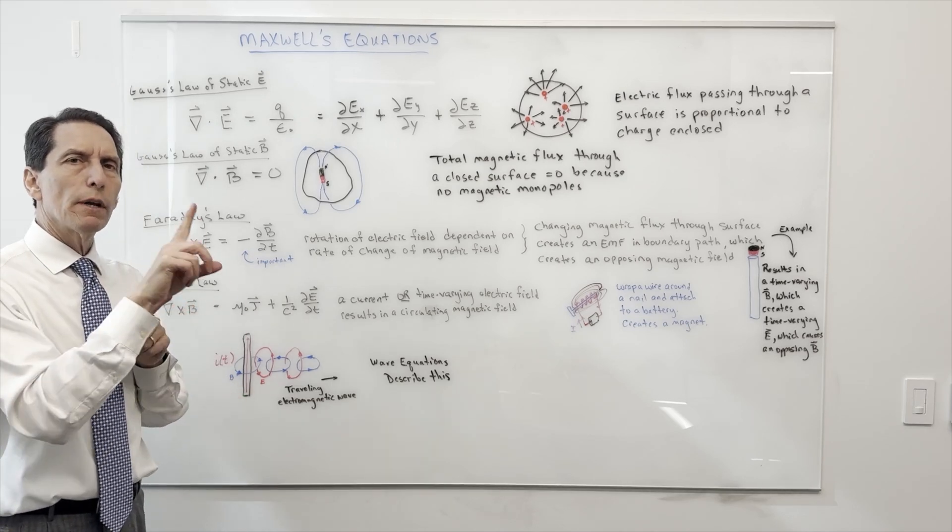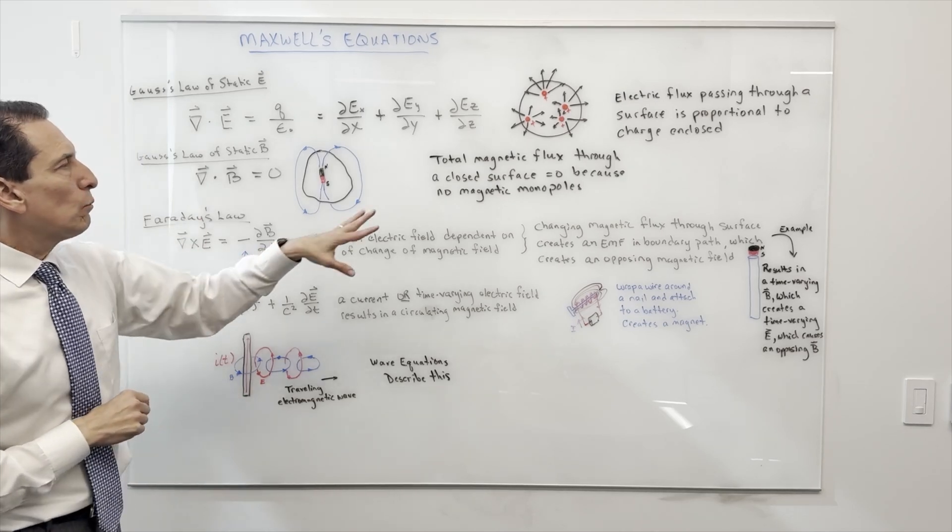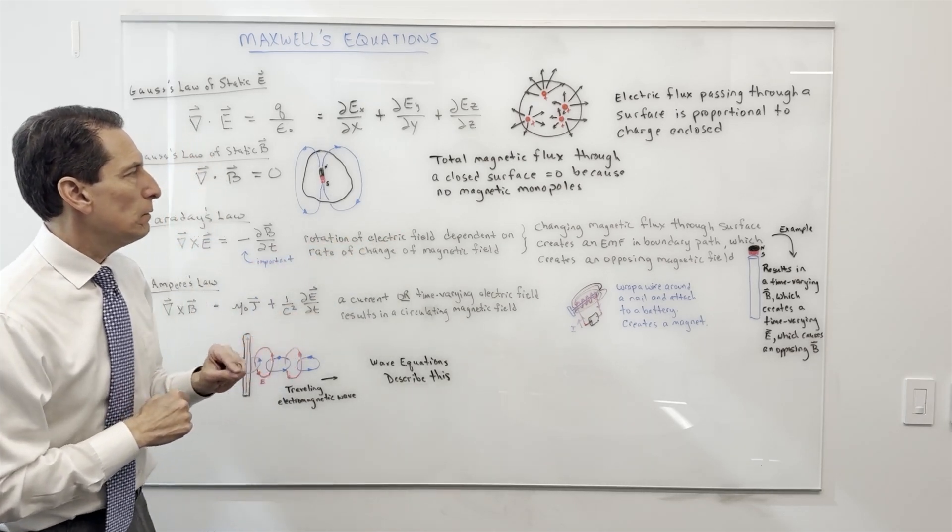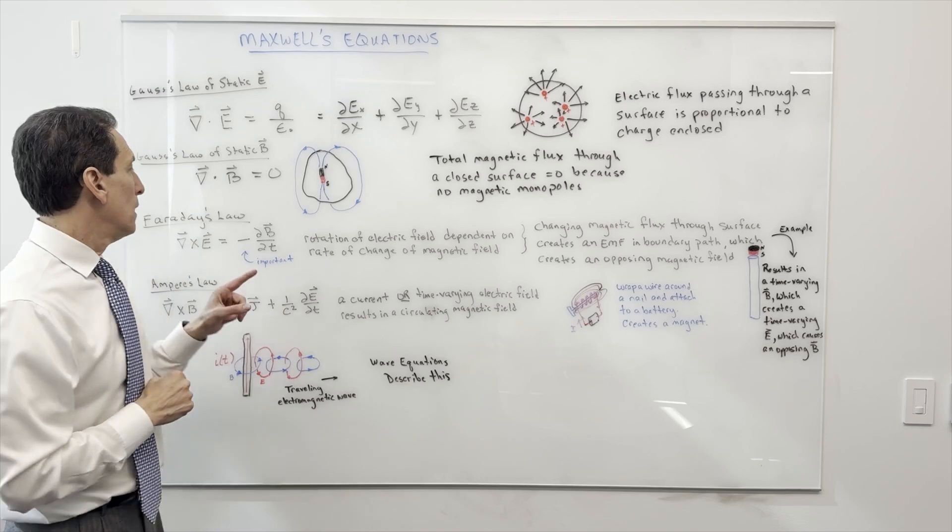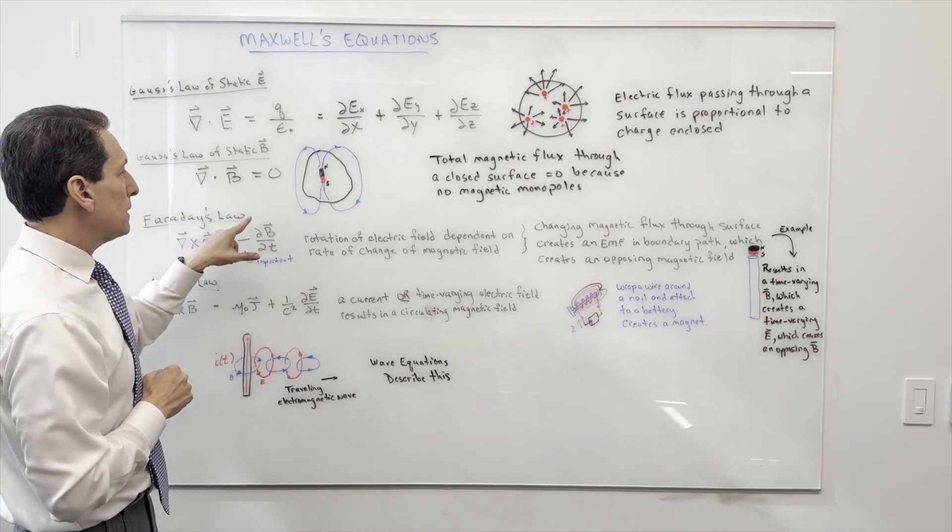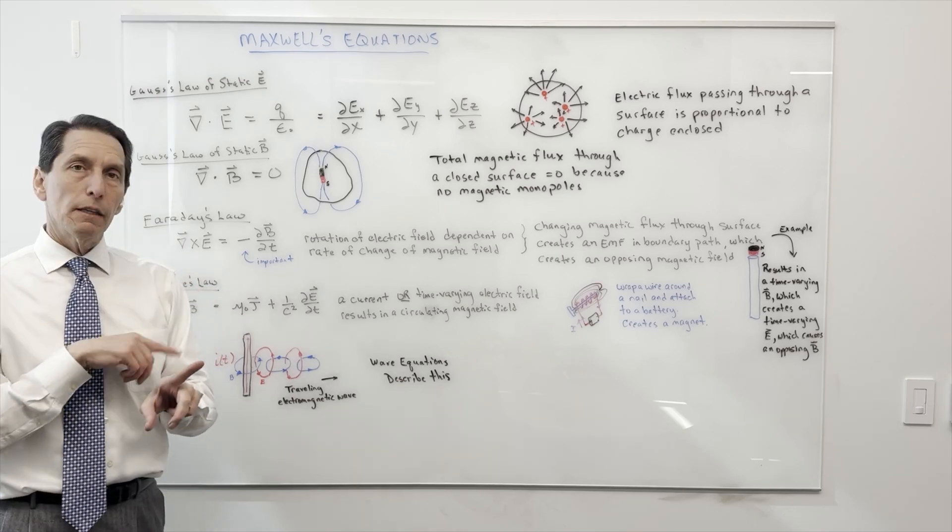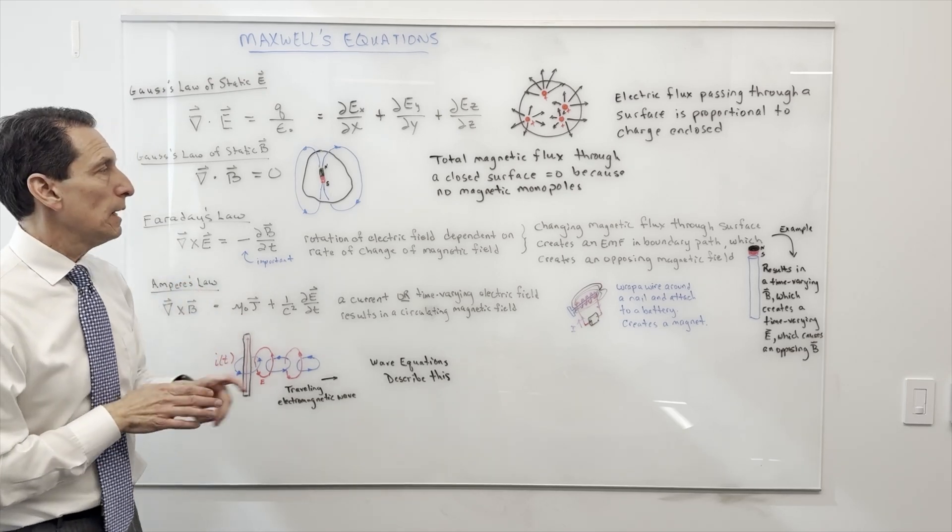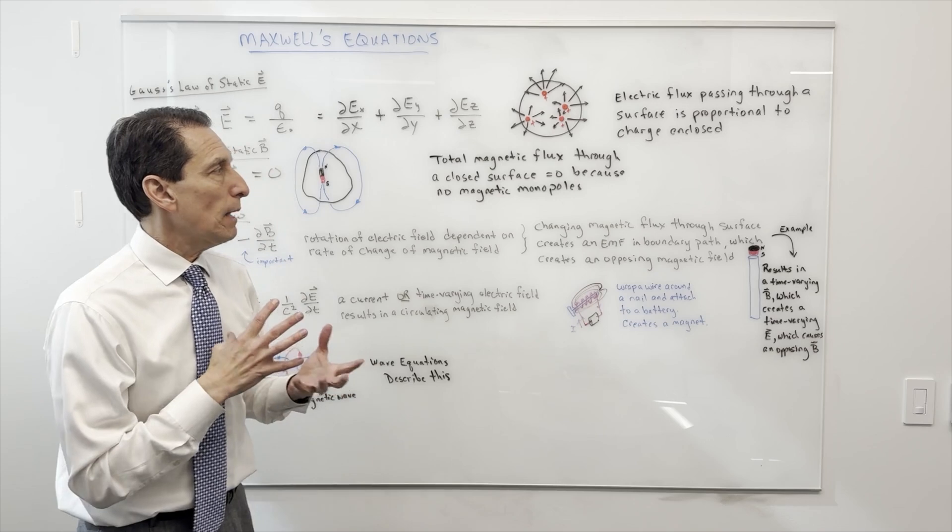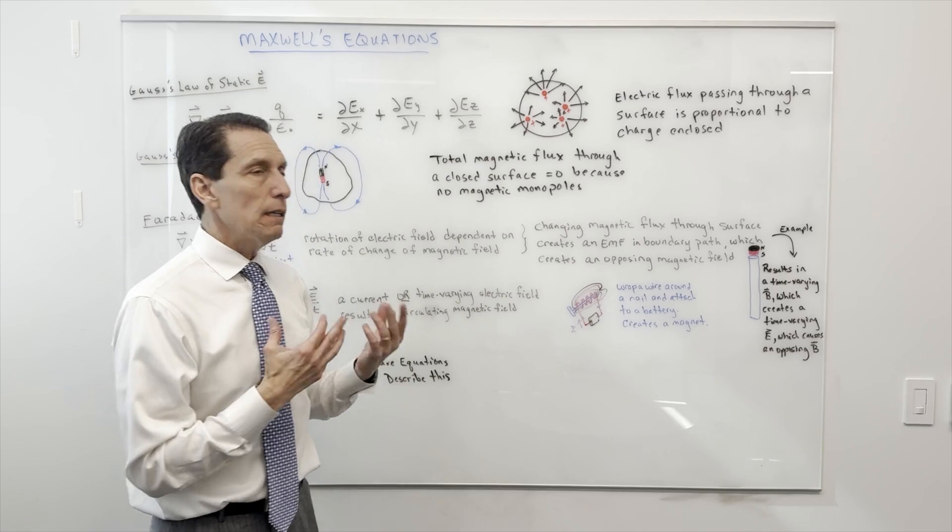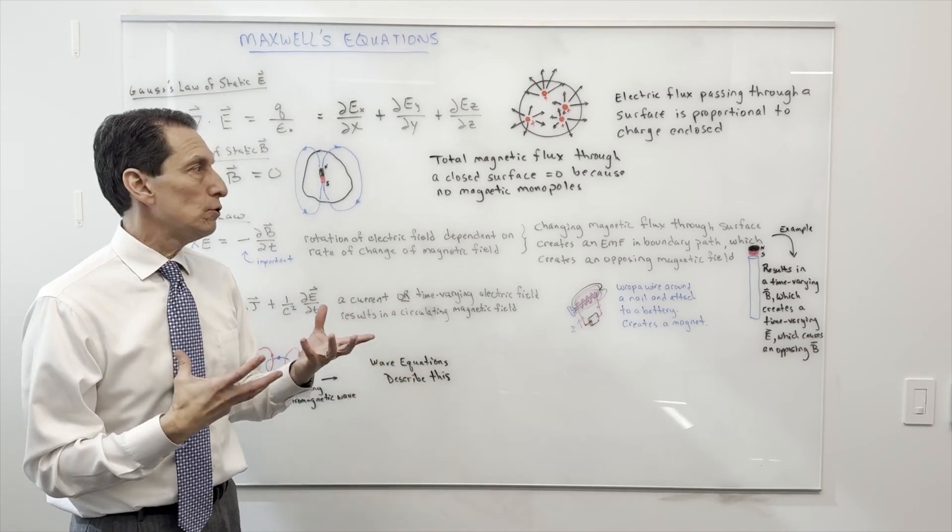Now what does that mean? Well, curl has to do with a rotating field, a field that's going around something. In words, there's a couple ways to think about this: the rotation of the electric field is dependent on the rate of change of the magnetic field. The more the magnetic field is changing with time, the more you're going to get this rotating electric field around it. And likewise, the changing magnetic flux through a surface creates an EMF or a voltage, a potential.